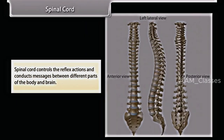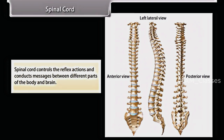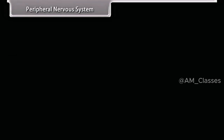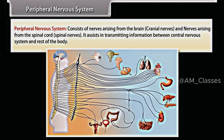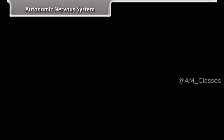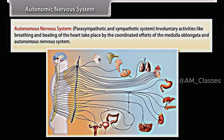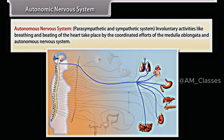The spinal cord controls reflex actions and conducts messages between different parts of the body and the brain. The peripheral nervous system consists of nerves arising from the brain (cranial nerves) and nerves arising from the spinal cord (spinal nerves). It assists in transmitting information between the central nervous system and the rest of the body. The autonomic nervous system includes the parasympathetic and sympathetic systems. Involuntary activities like breathing and beating of the heart take place by the coordinated efforts of the medulla oblongata and the autonomic nervous system.